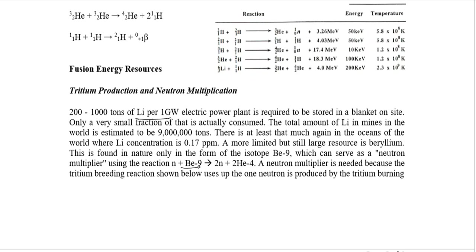Beryllium-9 reacts with a neutron to give two beryllium atoms and a helium atom, so one neutron input produces two neutrons output — giving an extra neutron to supply the nuclear fusion reaction. This is what we call a neutron multiplier. Neutron multipliers are needed for formation of tritium, formation of lithium, and continuation of the fusion reaction.